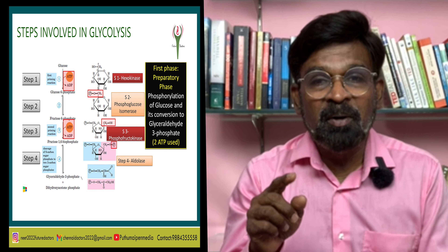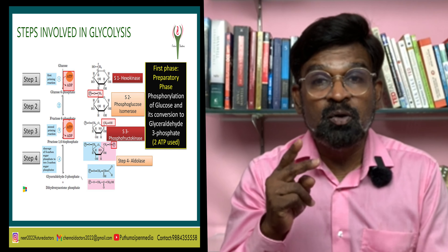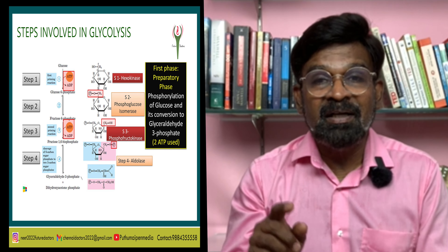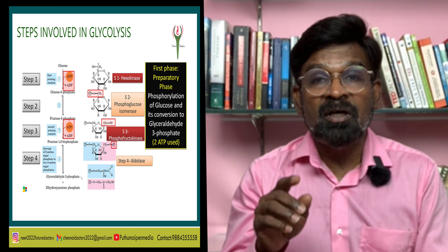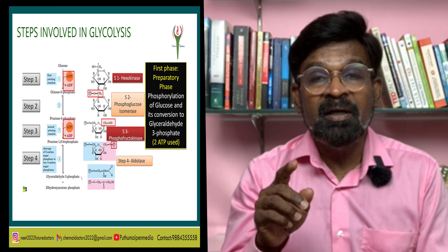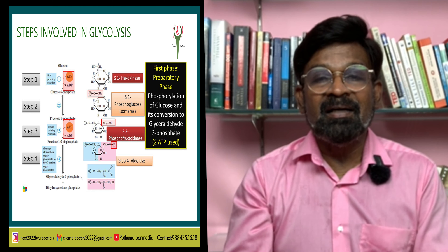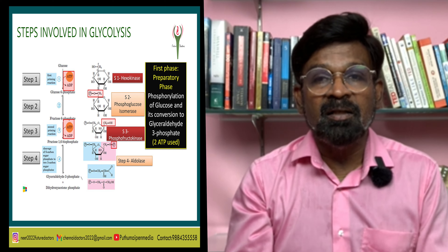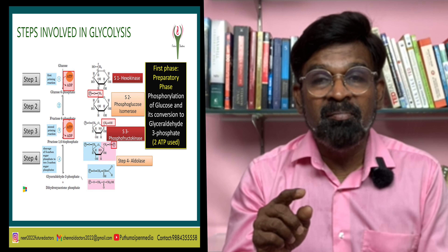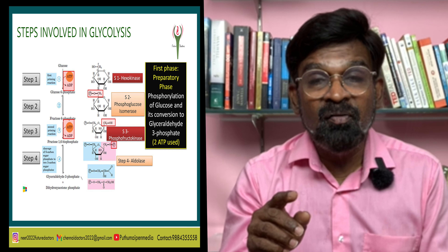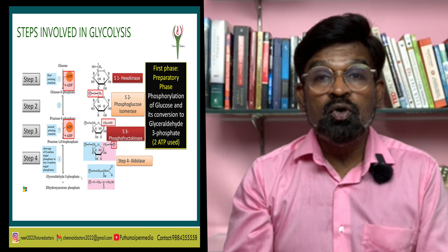Step 4: Splitting of fructose-1,6-bisphosphate takes place into two triose phosphate molecules — dihydroxyacetone-3-phosphate and 3-phosphoglyceraldehyde (PGAL). This reaction is catalyzed by the enzyme aldolase.